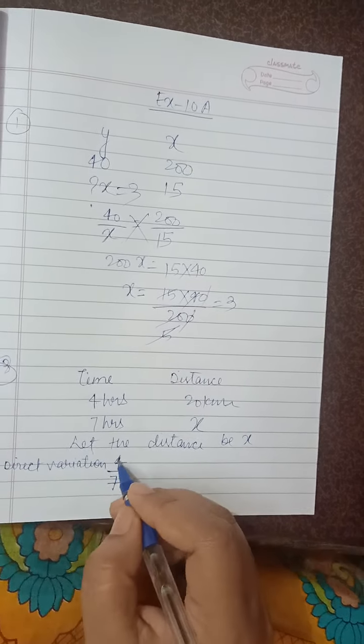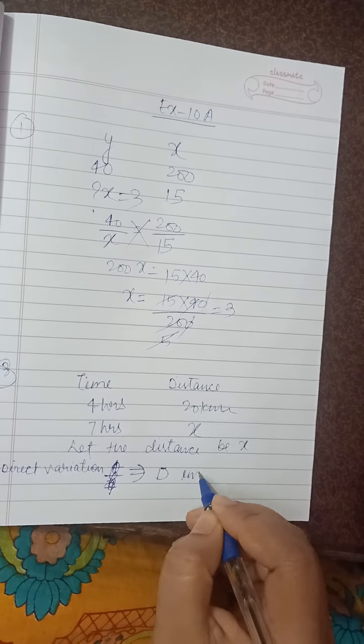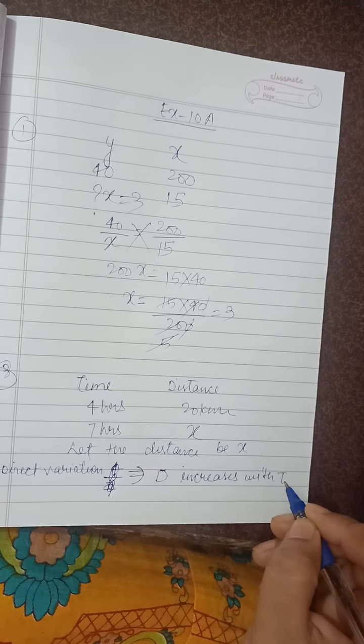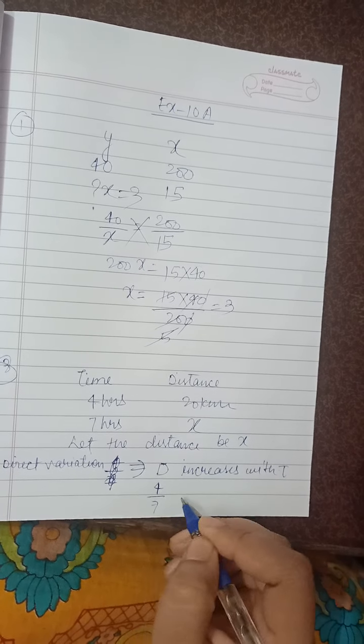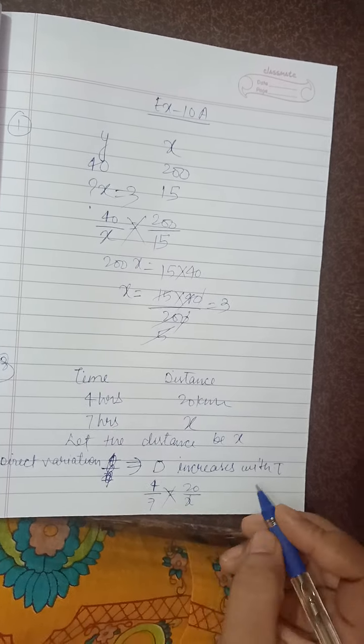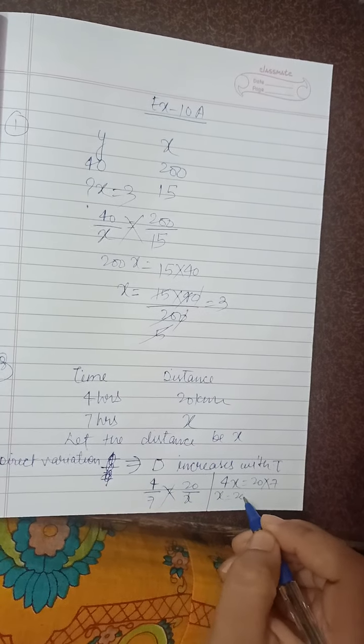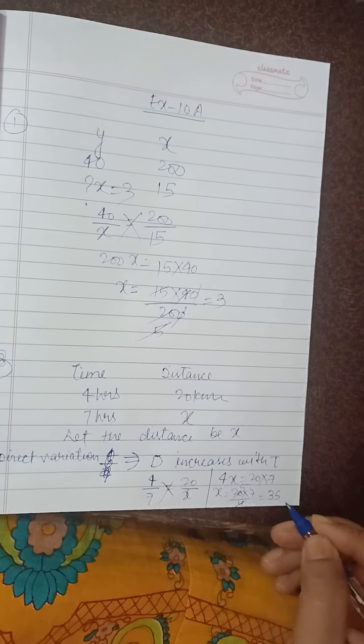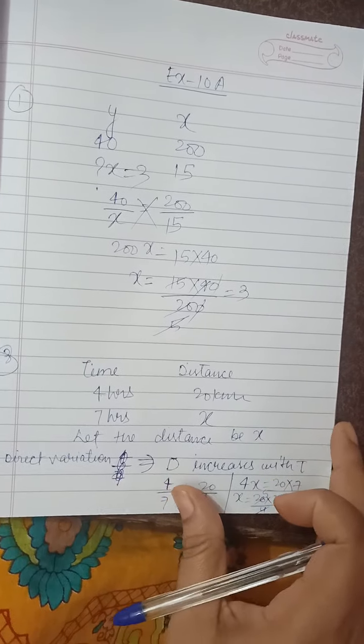Let the distance be x. Distance increases with time, so it is direct variation. You can write it as 4 upon 7 equals 20 upon x. By cross multiplication, 4x equals 20 into 7. So x equals 20 into 7 upon 4. This is 35 kilometers.